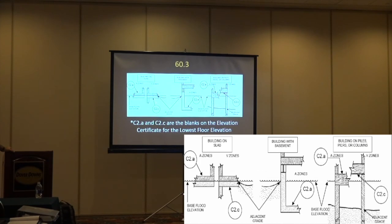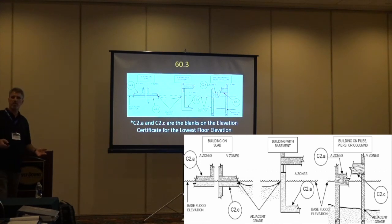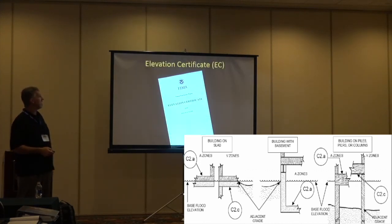In all of Florida there are probably 50 homes like this. Jim Schock mentioned it — I was teaching this class five or six years ago and said I don't think you can have a slab in the V zone. He said he had about 19 of them in his jurisdiction, all built in the 80s in St. Augustine. And then here's a building with a basement in an A zone, and finally a building on piles, piers, and columns — this is what we identify as our lowest horizontal structural member. The finished floor may be higher up, but for measurement I want the lowest horizontal structural member.